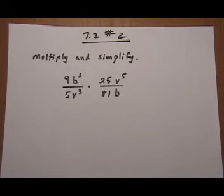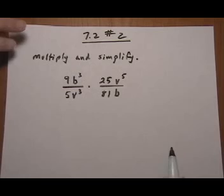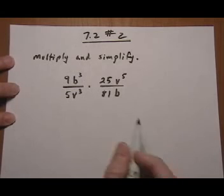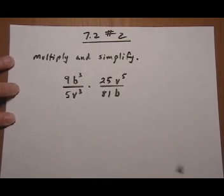7.2 number 2. Here we are multiplying two rational expressions and we are going to use the usual steps that we use even if they have binomials or trinomials.